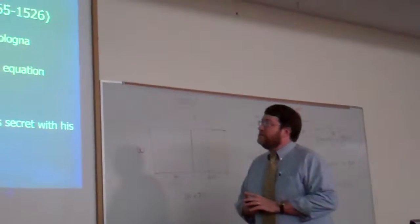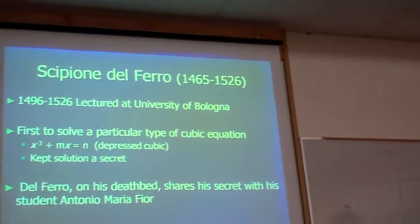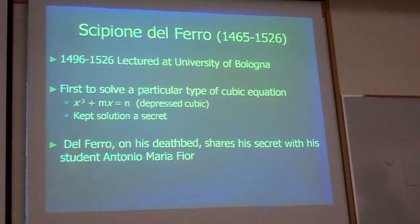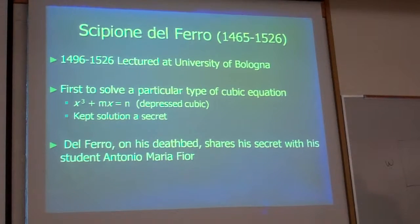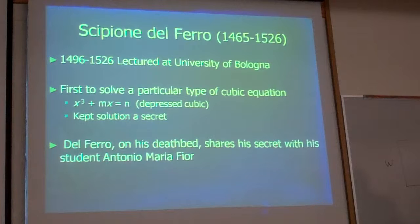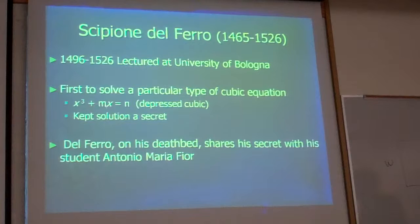Coming into play in this story is Scipione del Ferro. He lectured at the University of Bologna for over a quarter of a century. He was the first to solve a particular type of cubic equation — this is a big deal, which is why we talk about him over 500 years later. He solved what we call the depressed cubic: it has a cubic term, no square term, but has the linear term x to the first and a constant.